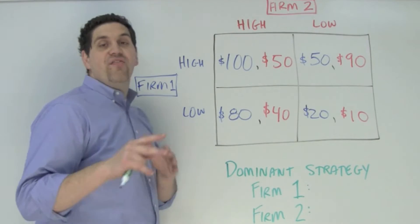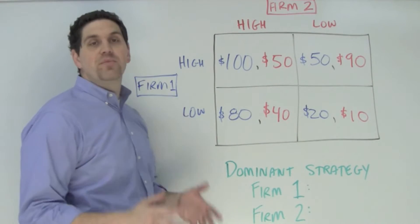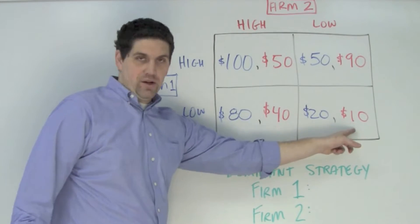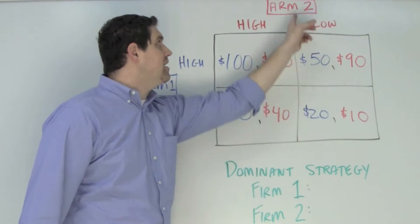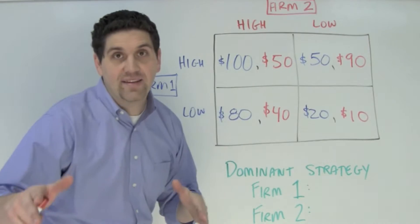So quick question: if both firms priced low, what is the profit of firm two going to be? It's going to be $10, right? Low, low, down here, red is firm two, $10. That's how you read the chart.